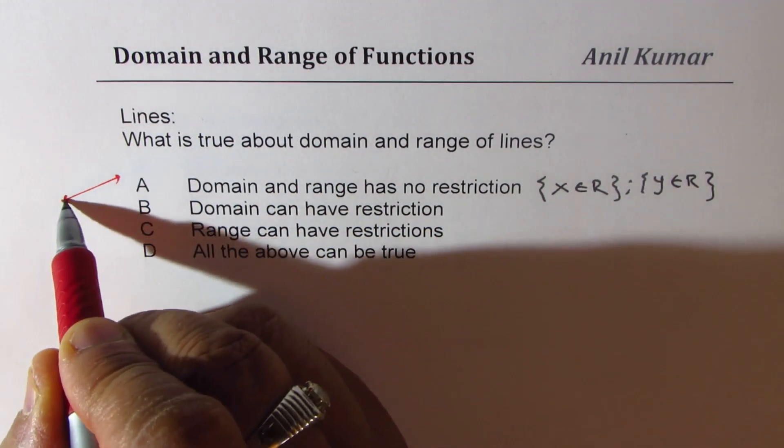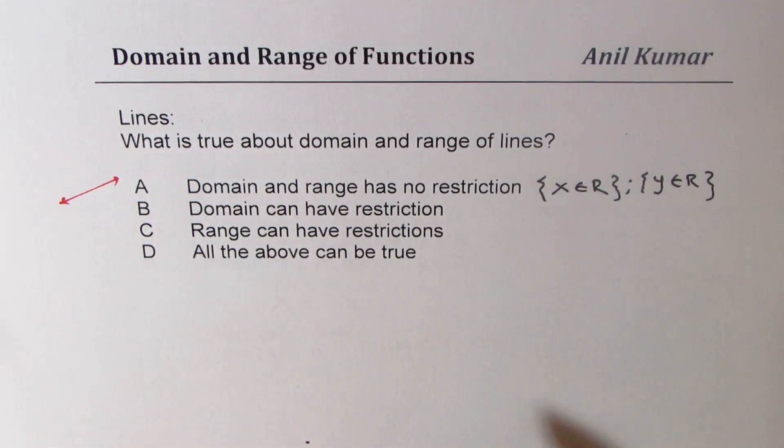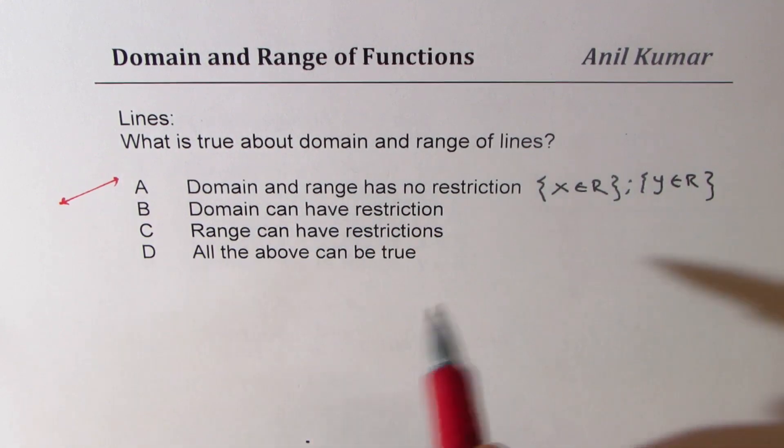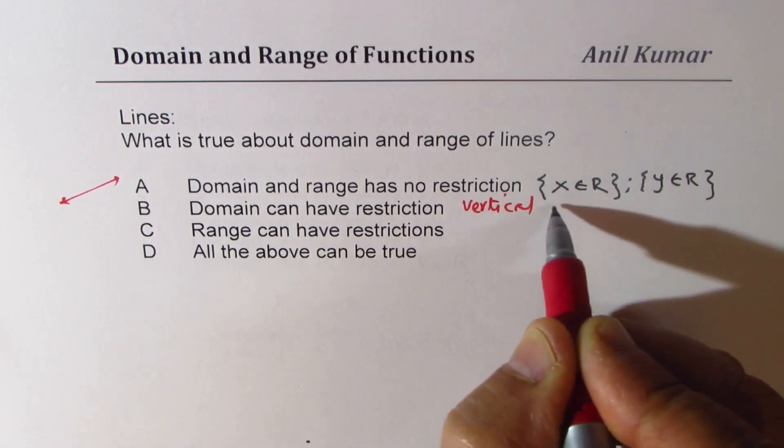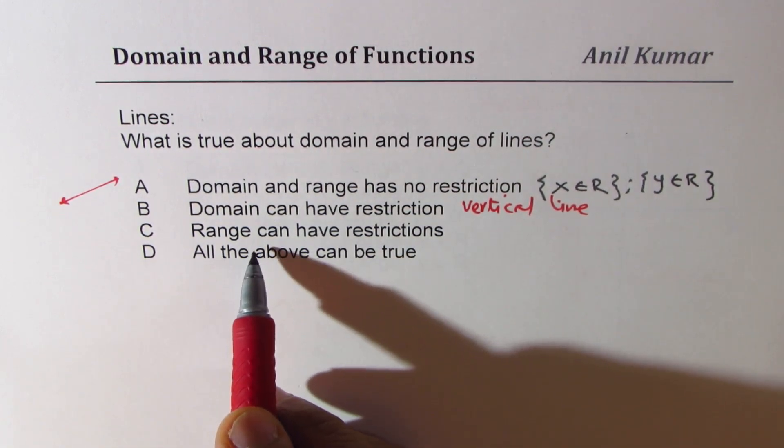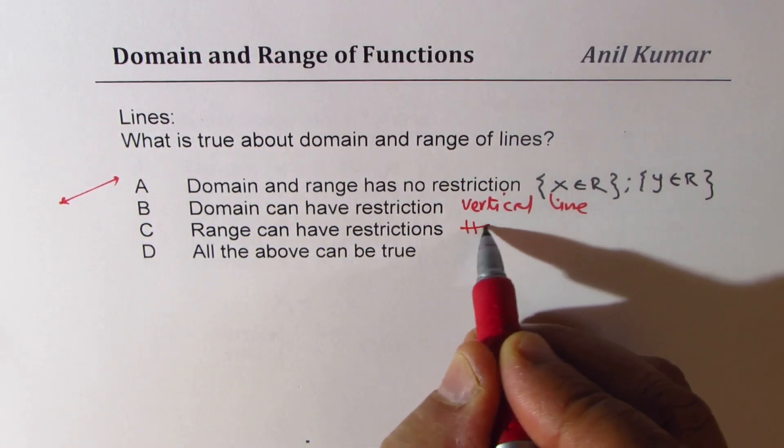Domain is restricted for vertical lines and range can be restricted for horizontal lines. And all the above is true for lines.